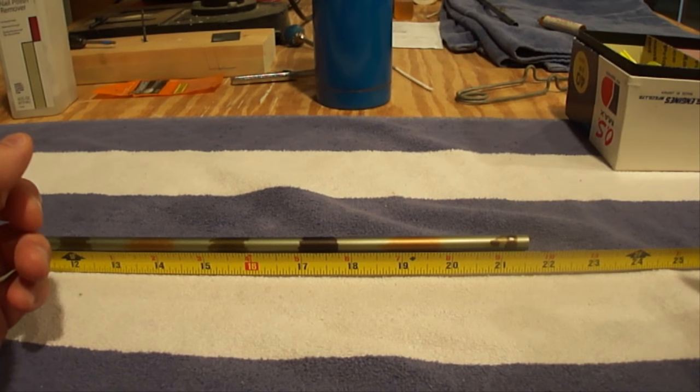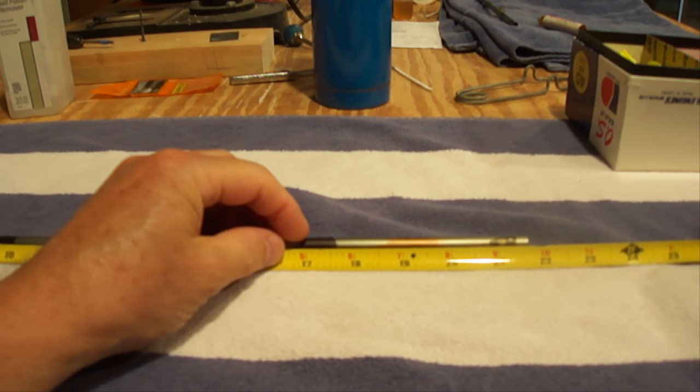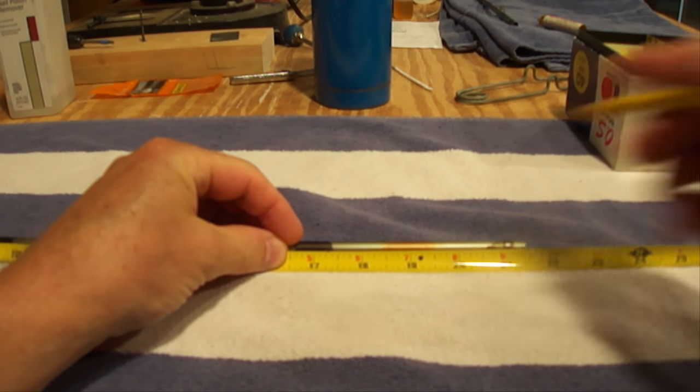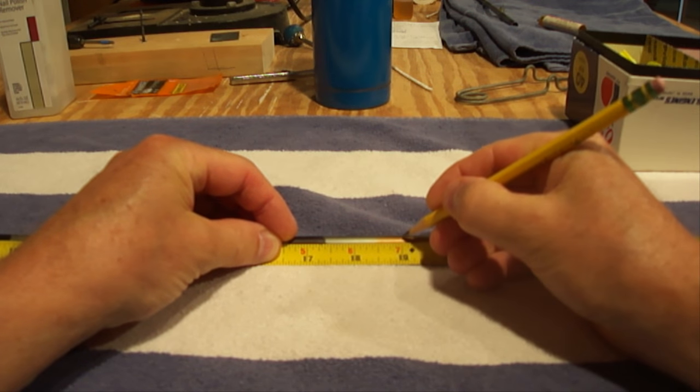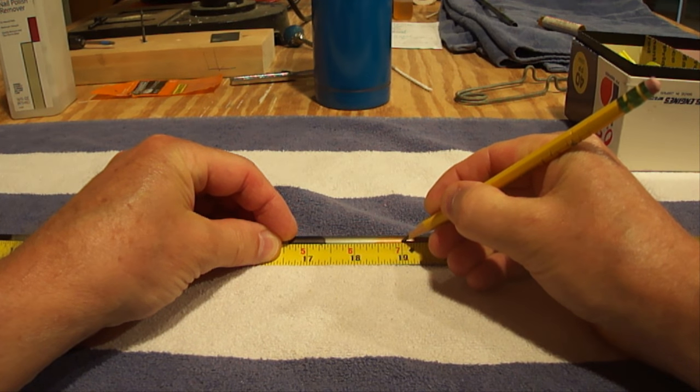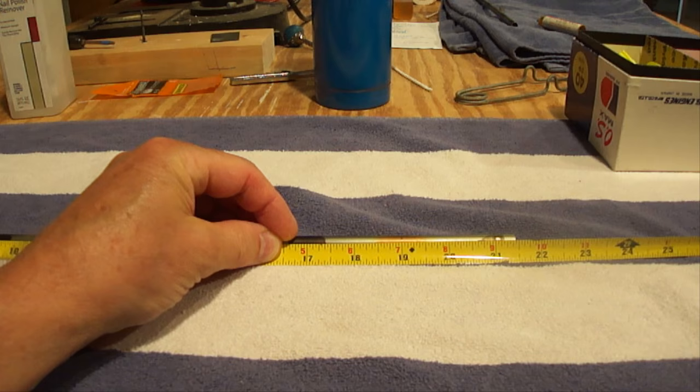Okay. So the first thing we're going to do is we're going to cut our arrow shaft. Just get your tape measure and take a regular pencil and just make a fine mark with the pencil. This will do a great job.